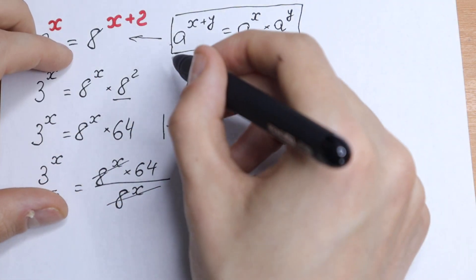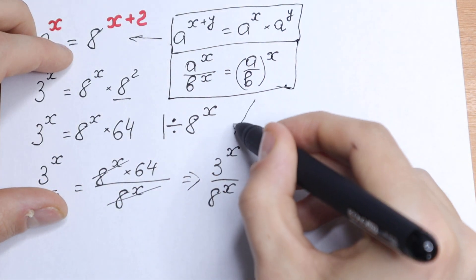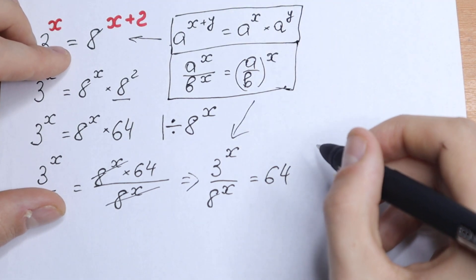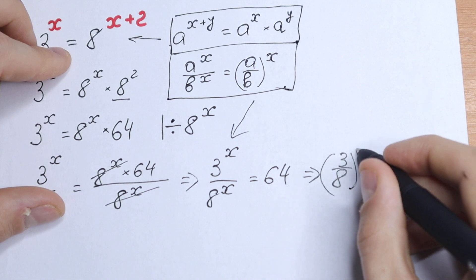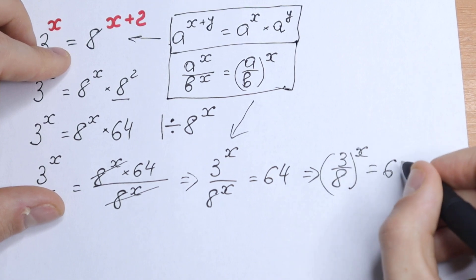So we can write this rule right here, and we can easily write that this one will be equal to 3 over 8, all raised to the power x, equal to 64.